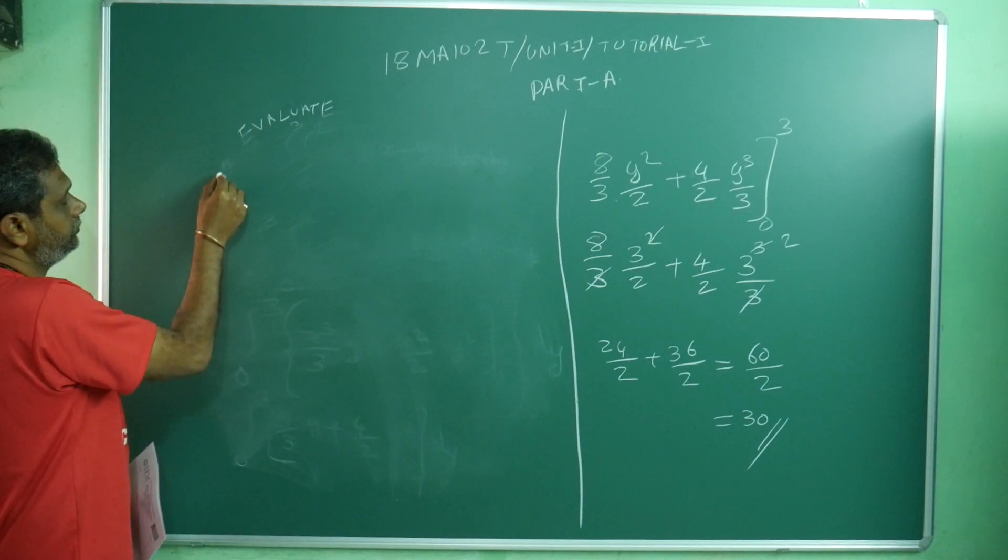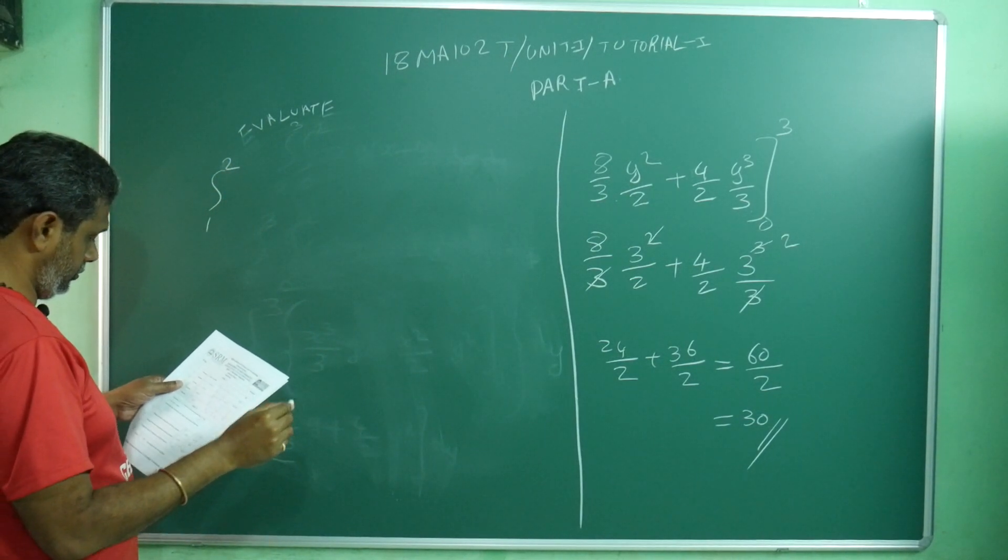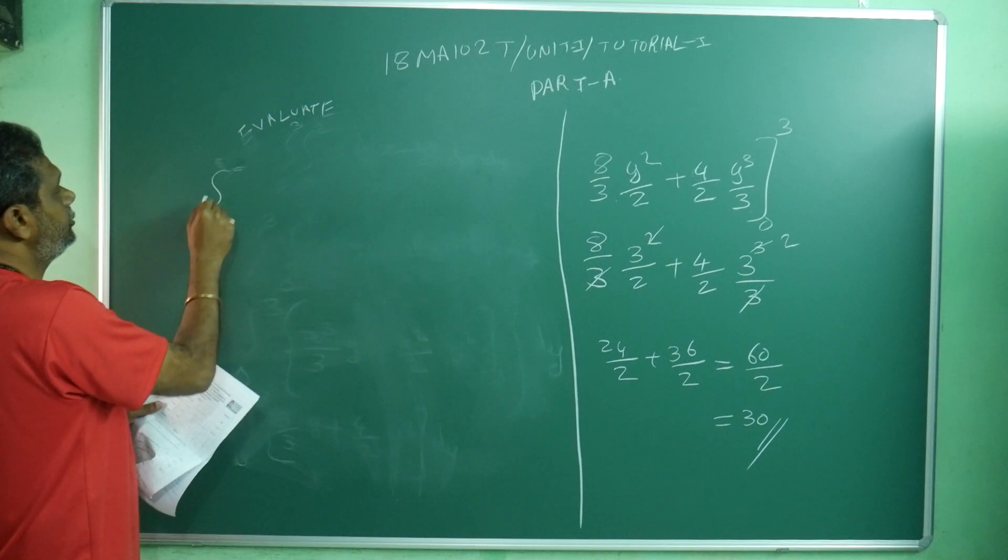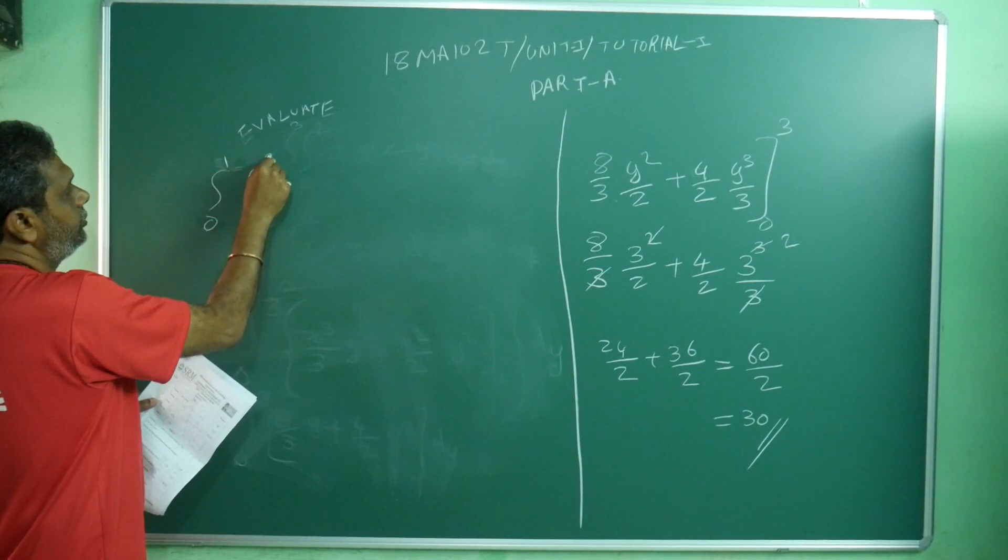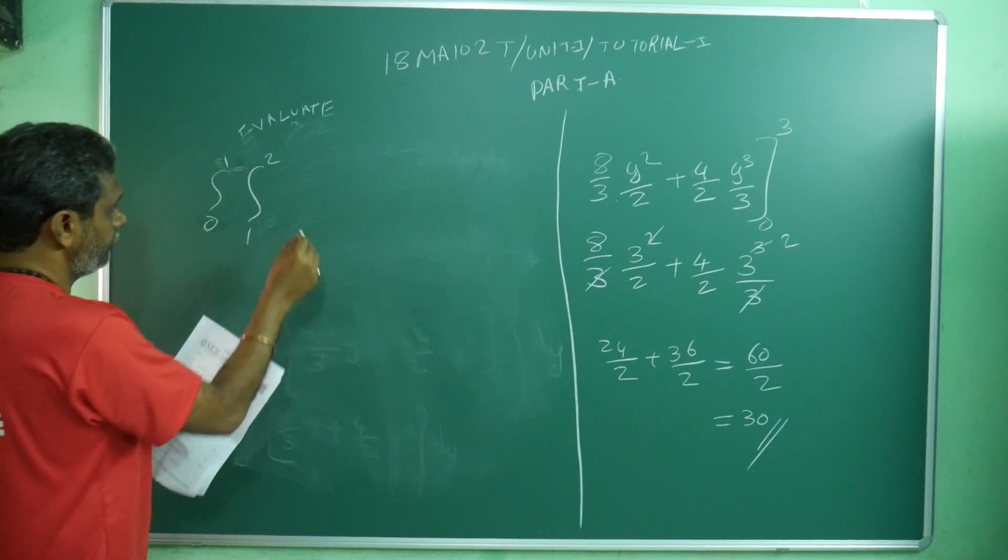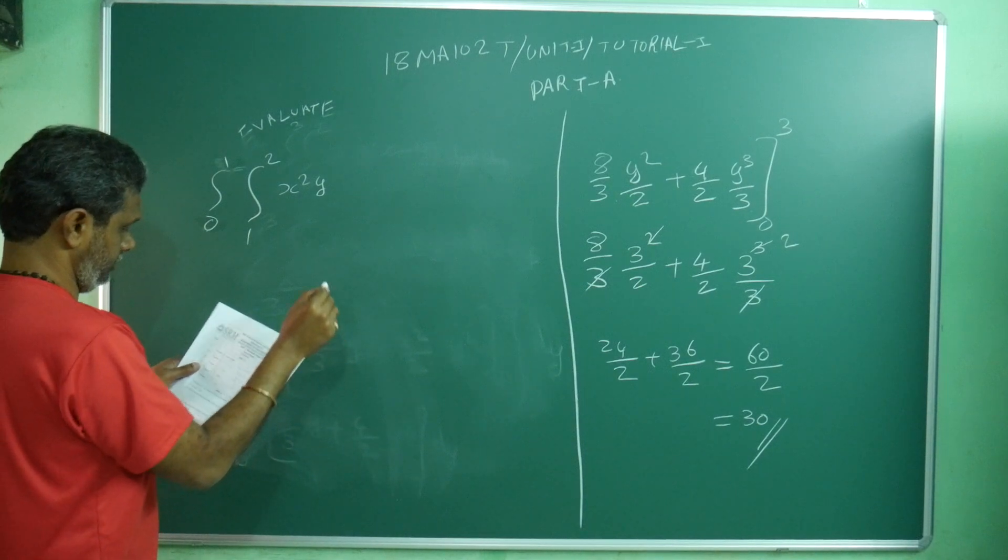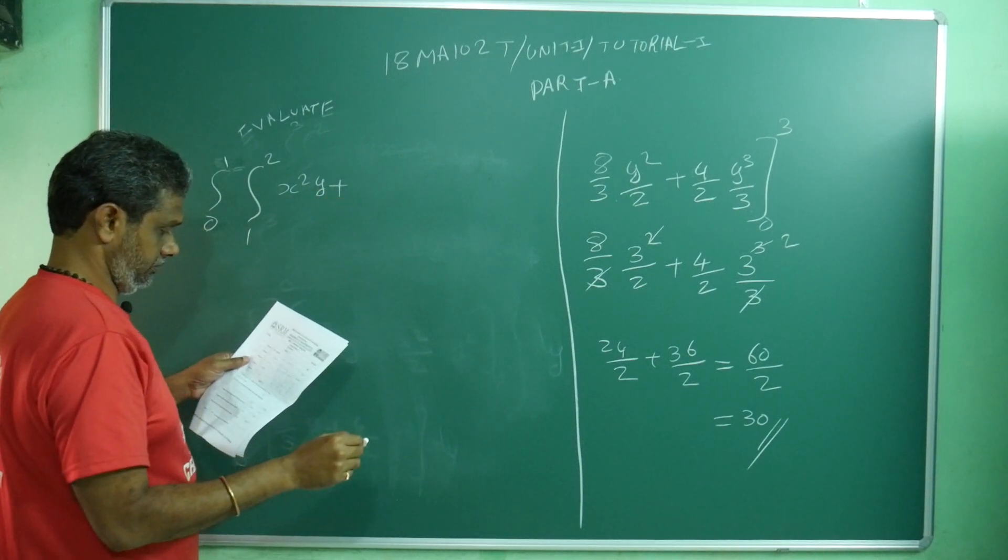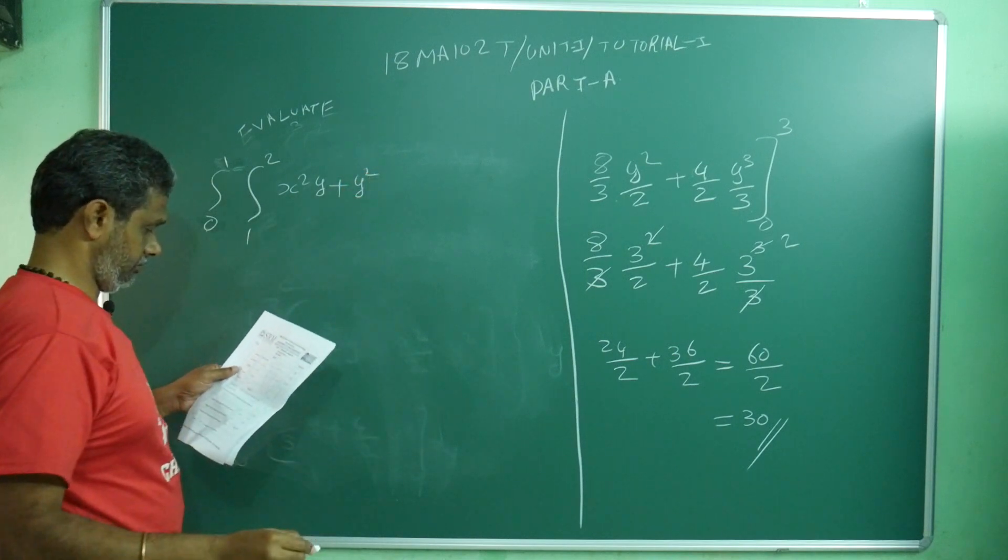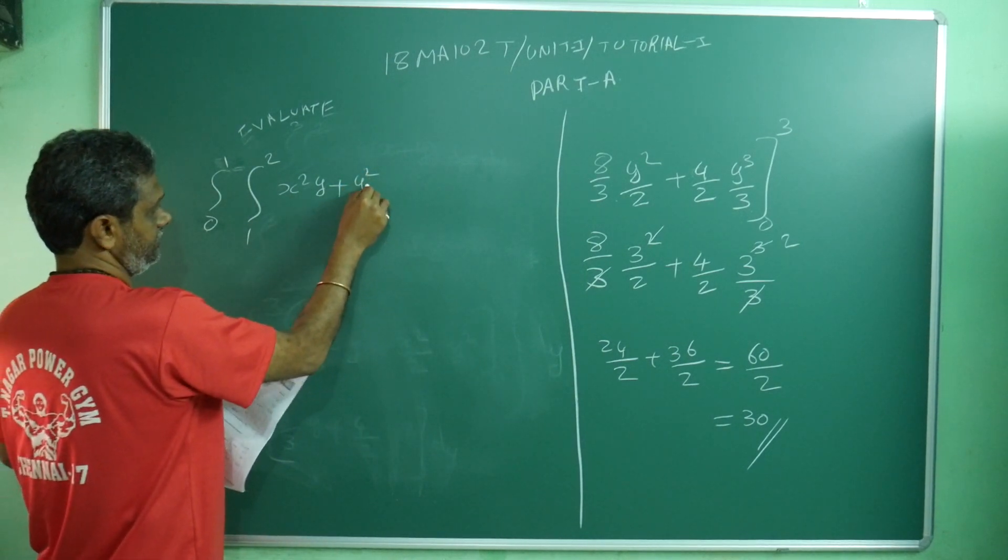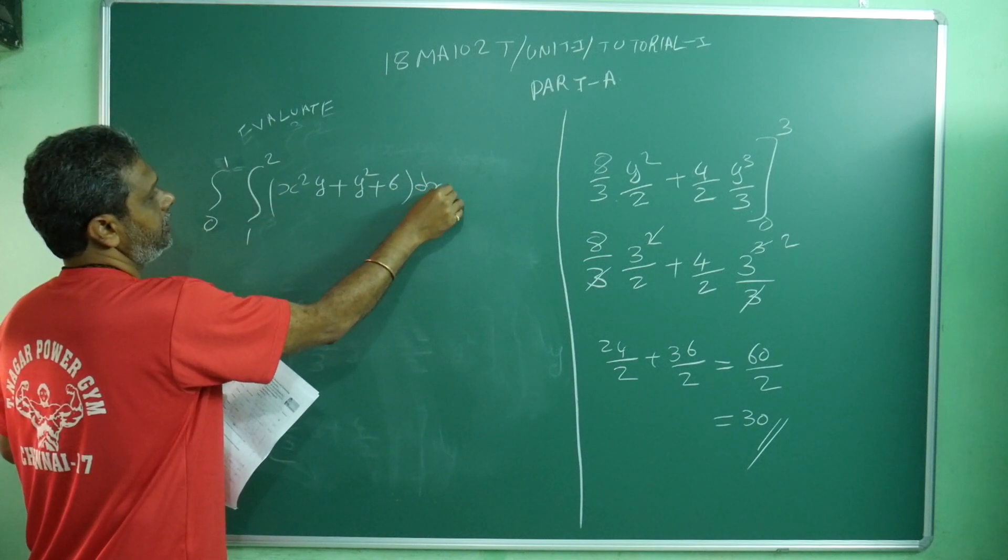Now integral 0 to 1, integral 1 to 2, x squared y plus y squared plus 6 dx dy.